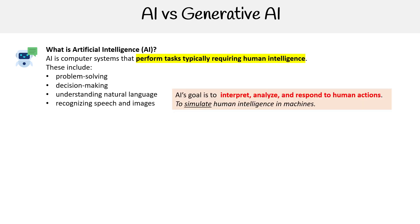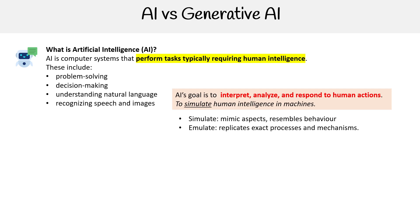The AI's goal is to interpret, analyze, and respond to human actions to simulate human intelligence in machines. I place a large emphasis on the word simulate, because it's not emulating. Simulate is where we are mimicking aspects resembling the behaviors of humans or other things. Emulation is when we're actually replicating exact processes in machines — it's the real virtualization of the human mind.